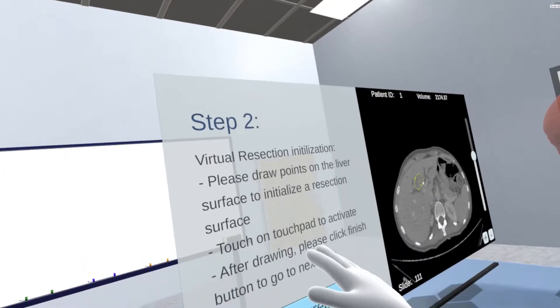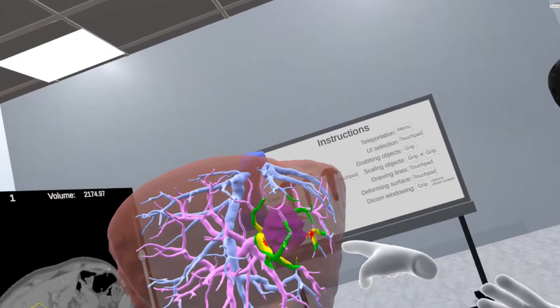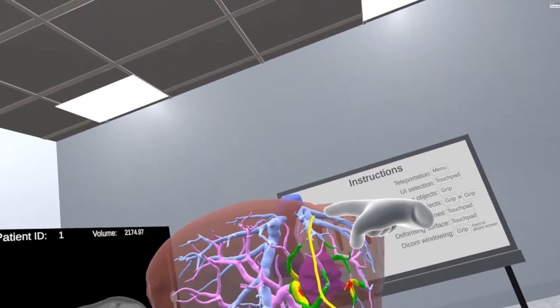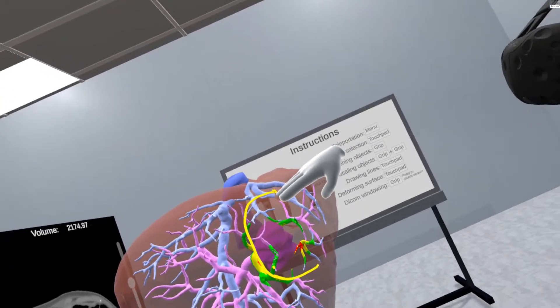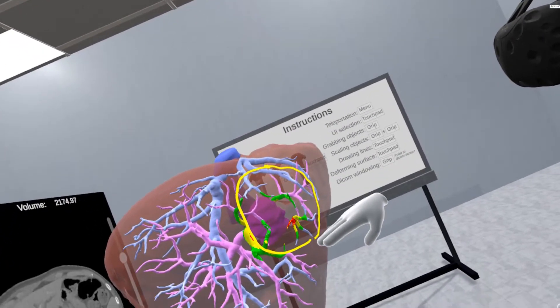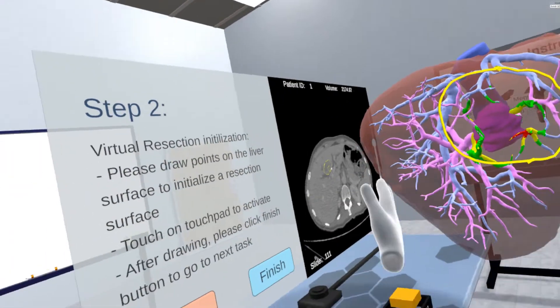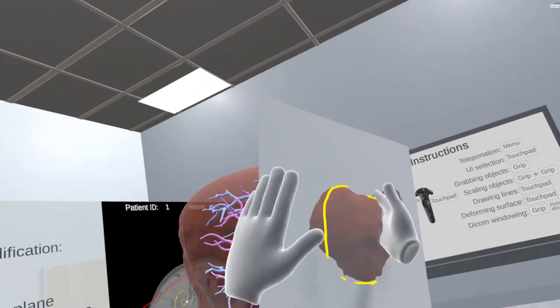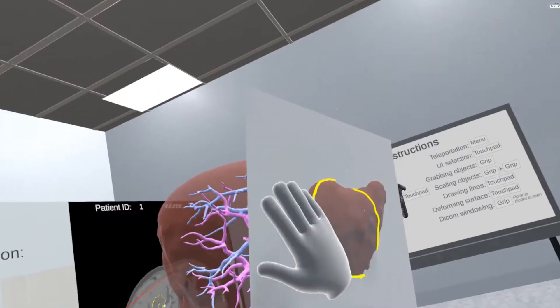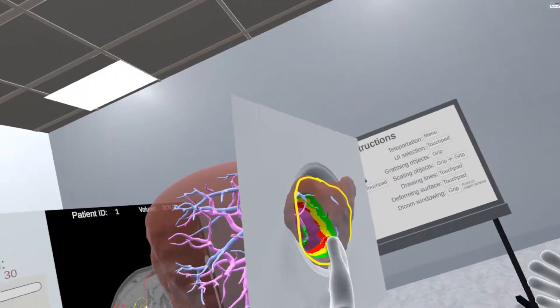For virtual resection initialization, it is required for the users to draw lines on the liver parenchyma surface. The reason for drawing lines is to enable the user to specify the location and direction of a resection surface. The initial resection surface is computed by means of a principal component analysis from the lines drawn by the user. We also attempt to generate an automatic deformation based on this drawing.